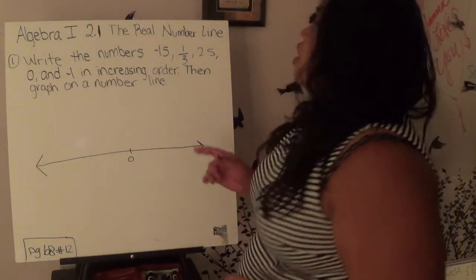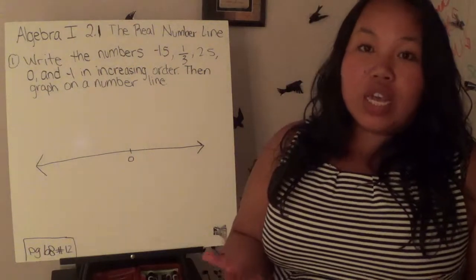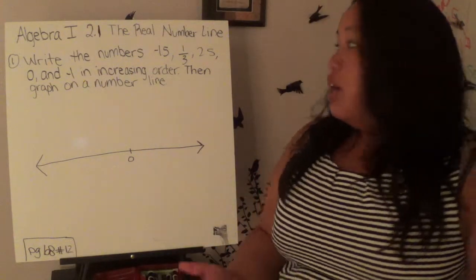In Algebra 1, Section 2.1, we're dealing with the real number line. The real number line is going to help you understand a little bit more when we're adding and subtracting numbers.